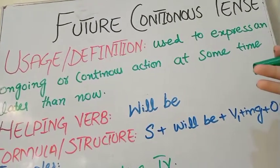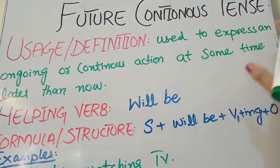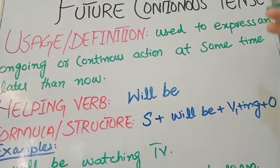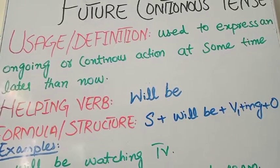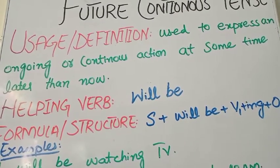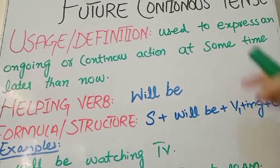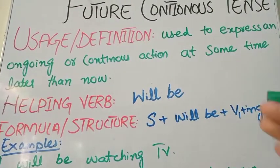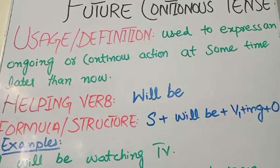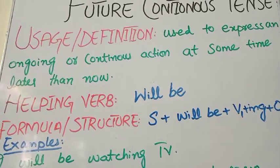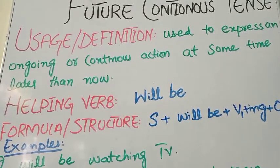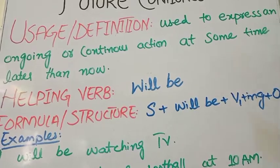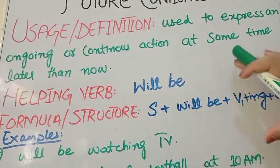Future continuous tense is used to express an ongoing or continuous action at some time later than now. Whatever action is ongoing after the present, we express it through future continuous tense. This can also be a promised or planned action going on at a specific time in the future. For example, I will be enjoying vacations in December — these are actions promised and thought to be ongoing in the future.